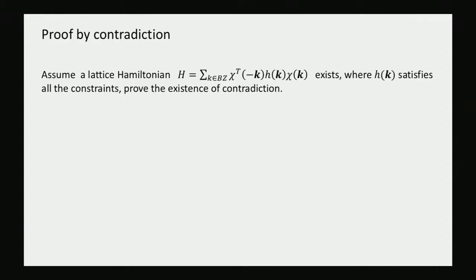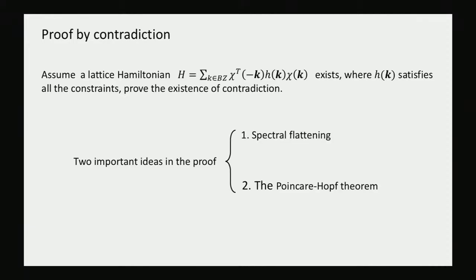The strategy of the proof is proof by contradiction. We assume there exists a lattice Hamiltonian whose matrix function H(k) satisfies all the constraints, and we derive a contradiction. There are two essential ideas. One is spectral flattening, which I will explain. The other is a theorem in differential topology called the Poincaré-Hopf theorem.